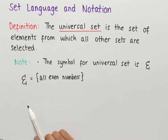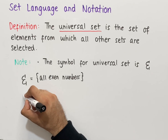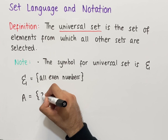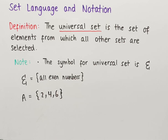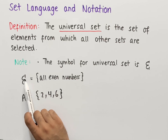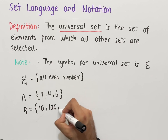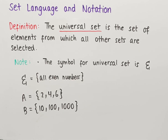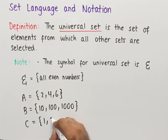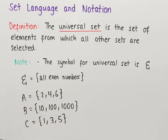For example, if the universal set is all even numbers, then any set we create must be a combination of even numbers. Set A could be two, four, and six — completely fine since every element of A is in the universal set. Set B could be ten, one hundred, and one thousand — also fine. However, set C containing one, three, and five is not valid since those are not even numbers.